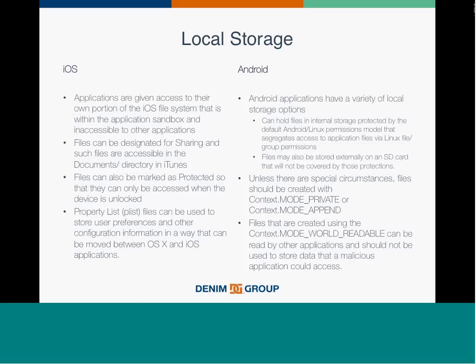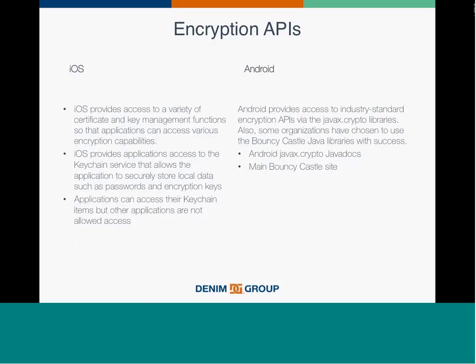Another example is encryption APIs. iOS provides access to a variety of key management functions that can access various encryption capabilities. The keychain, familiar to Apple device users, allows you to securely store local data such as passwords and encryption keys. Applications can access items in the keychain, but they are not allowed access by others. On the Android side, you have access to a full range of industry standard encryption APIs via the javax.crypto library. That gives more moving parts on the Android side. The two major platforms couldn't be more different when it comes to encryption APIs, which are essentially part of every secure development effort in mobile.